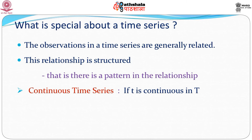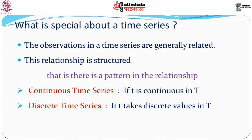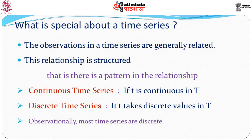We say that a time series is continuous if the index set T is continuous, and discrete if T takes discrete values. Most time series are discrete by nature. However, there are some continuous time series — for example, an ECG is plotted continuously over a given interval of time and can be viewed as a continuous time series. But in most cases we observe phenomena at discrete time points, so even if the underlying series is continuous, observationally it would be discrete. In this study, we are primarily concerned with discrete time series.